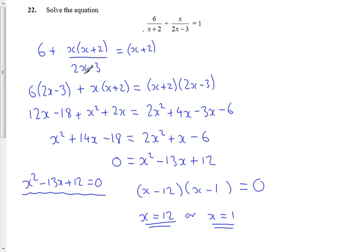Then I'm left with this denominator, 2x minus 3, so I've multiplied the whole equation by this. So I get 6 lots of 2x minus 3, it cancels out here, and I get x plus 2, 2x plus 3.